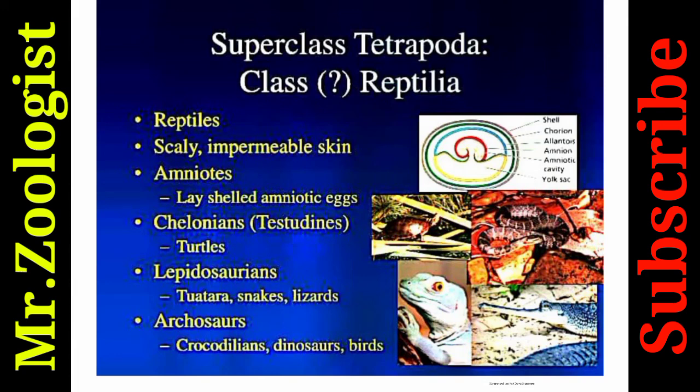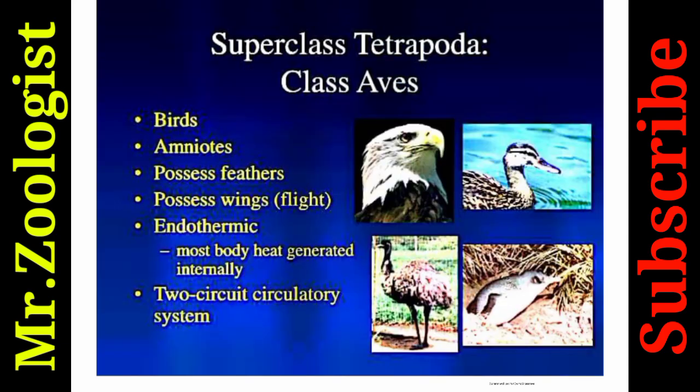Class Reptilia includes reptiles with scaly, impermeable skin. They are amniotes that lay shelled amniotic eggs. Orders include Chelonia or Testudines (turtles), Lepidosauria (tuatara, snakes, and lizards), and Archosauria (crocodilians, dinosaurs, and birds).